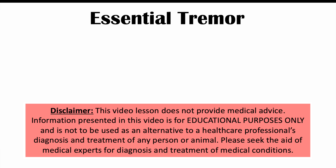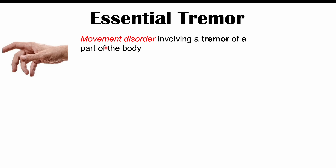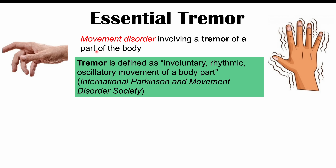Hi everyone. This lesson is on essential tremors. Essential tremors are a movement disorder involving a tremor of a part of the body. A tremor is defined as an involuntary rhythmic oscillatory movement of a body part. This definition comes from the International Parkinson and Movement Disorder Society.